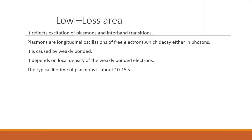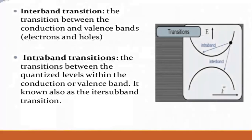Plasmons are longitudinal oscillations of free electrons which decay into photons. They are caused by weakly bounded electrons and depend on local density of the weakly bounded electrons. The typical lifetime of plasmons is about 10 to the minus 15 seconds. There are two types of transitions: inter-band transition, the transition between the conduction and valence bands creating electrons and holes, and intra-band transition, the transition between the quantized levels within the conduction or valence band, also known as inter-sub-band transition.